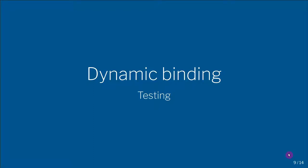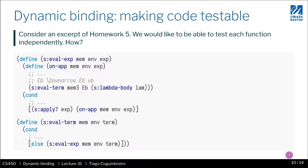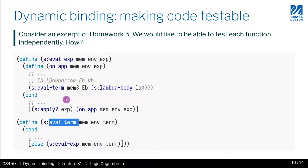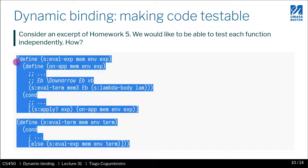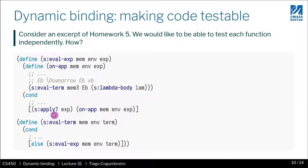Another use case of dynamic binding is testing. This is an excerpt from homework 5. We have an eval function that evaluates expressions and a function that evaluates terms, and in each of them, the function that evaluates terms has to call the one that evaluates expressions, and inside the implementation of expressions, we also have to call evaluate terms. The problem with this kind of mutually recursive code is that it is very hard to test.